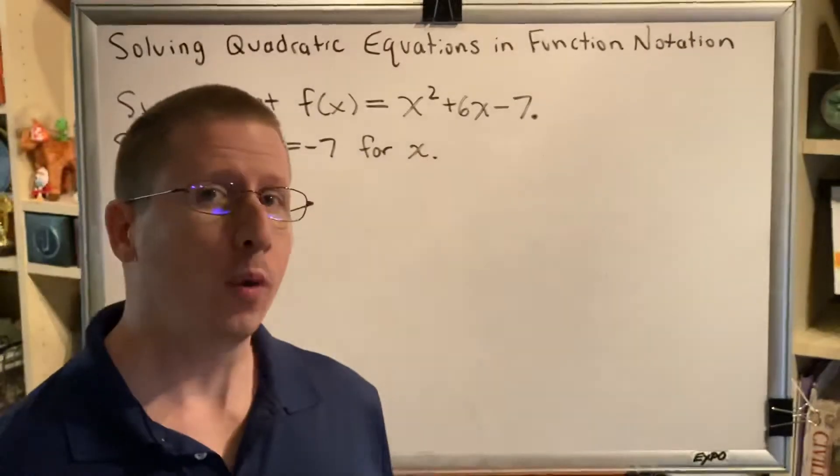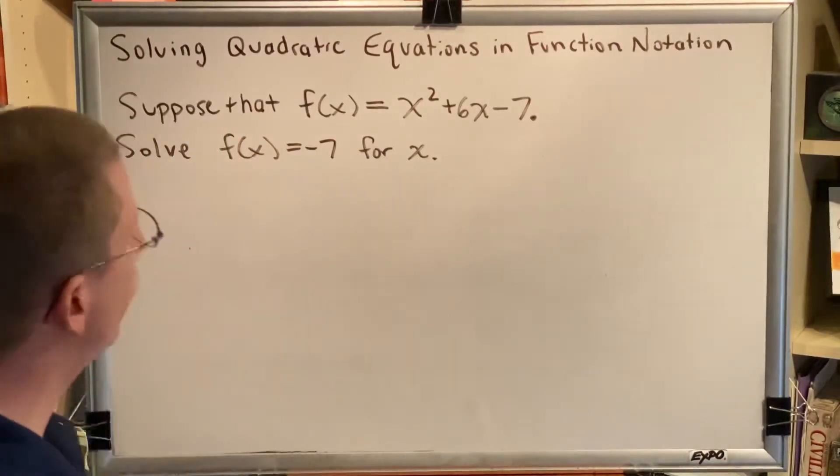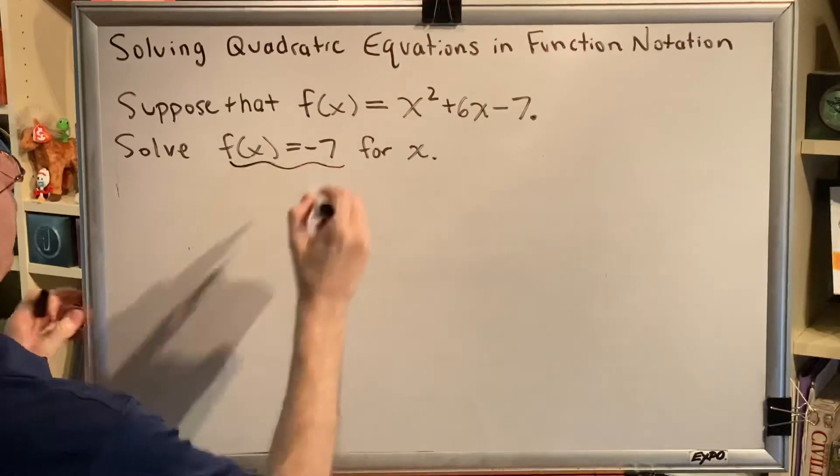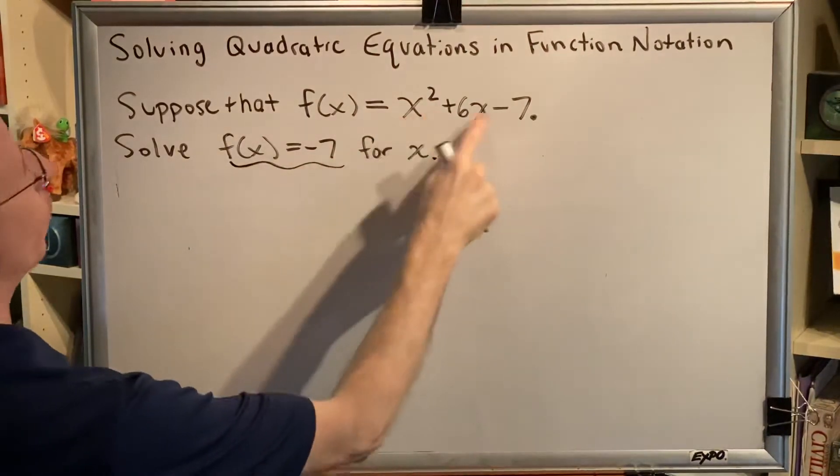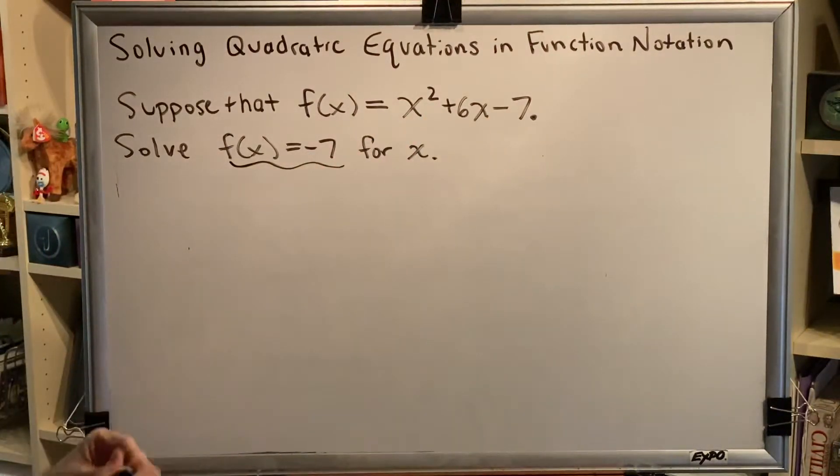Okay, so the number one mistake that students make when they solve this problem is they look at this part and they assume that they have to replace all of the x's with negative 7. And that is not true.